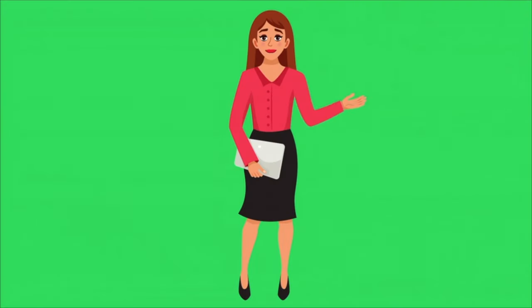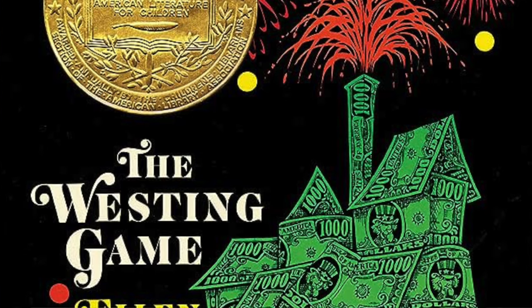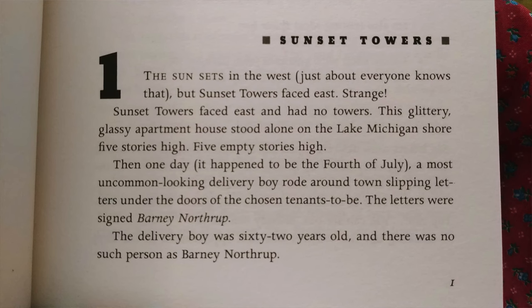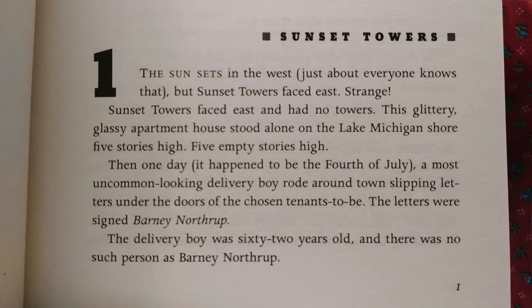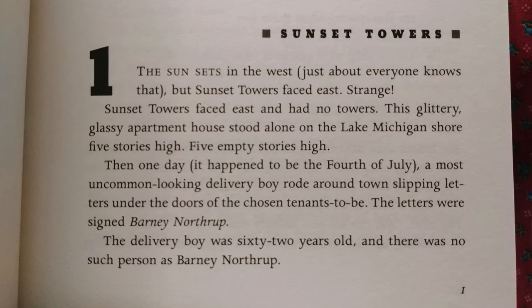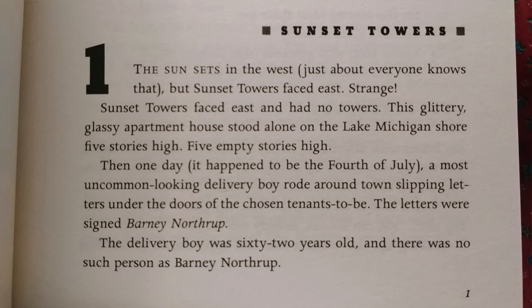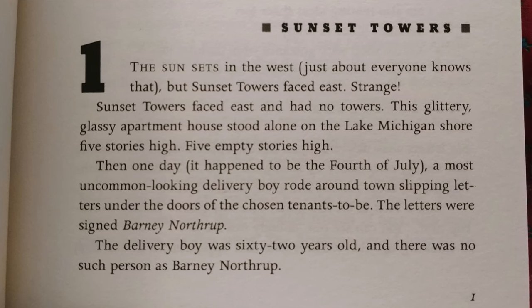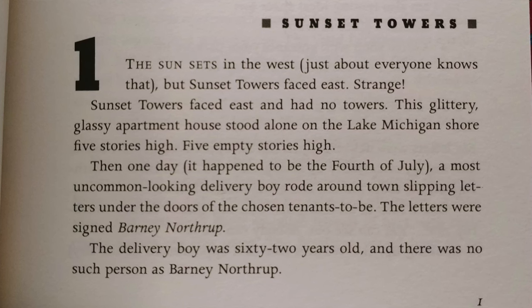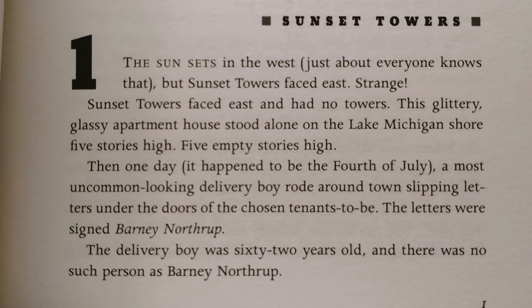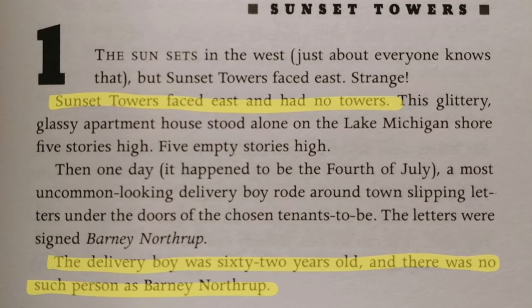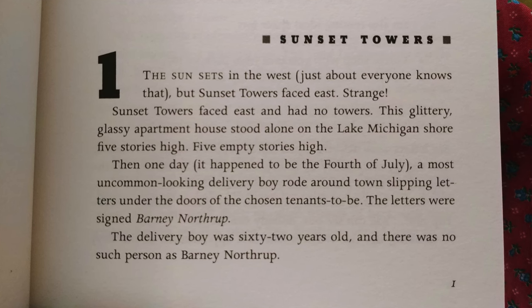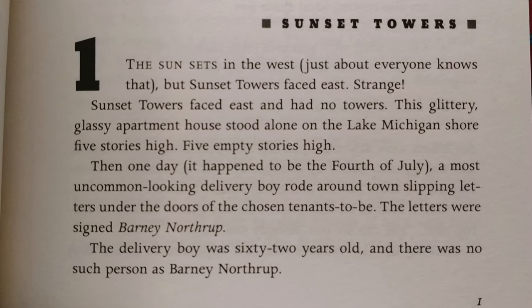Examples from published books: let's take a look at some descriptions from published novels. First, from Ellen Raskin's classic middle grade novel The Westing Game: 'The sun sets in the west. Just about everyone knows that. But Sunset Towers faced east. Strange. Sunset Towers faced east and had no towers. This glittery, glassy apartment house stood alone on the Lake Michigan shore. Five stories high. Five empty stories high. Then one day — it happened to be the 4th of July — a most uncommon looking delivery boy rode around town, slipping letters under the doors of the chosen tenants to be. The letters were signed Barney Northrup. The delivery boy was 62 years old, and there was no such person as Barney Northrup.' This playful passage mixes concrete and abstract language to appeal to young readers, makes heavy use of blatant contradictions to pique interest, and contains a clue to the novel's final reveal on the very first page.